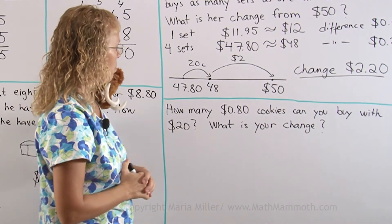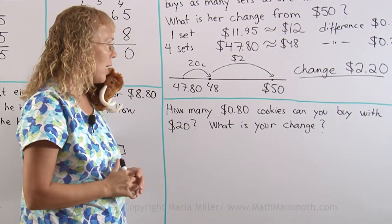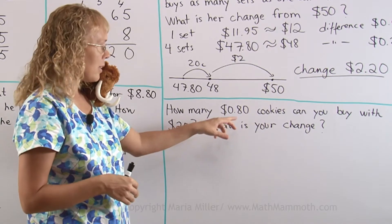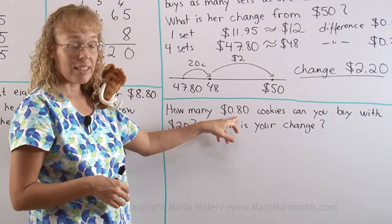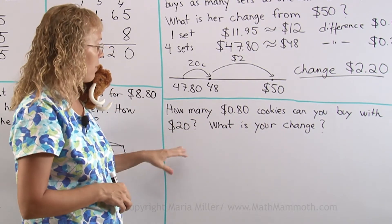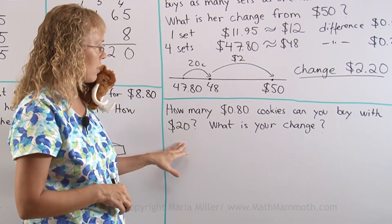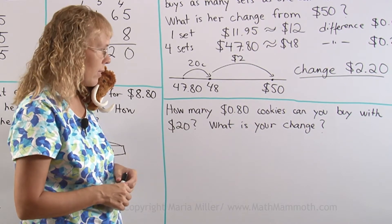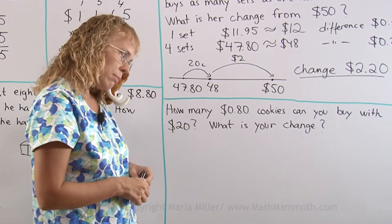Our last word problem: how many cookies that cost $0.80 a piece can you buy with $20.00, and what is your change? What is it, Matthew?